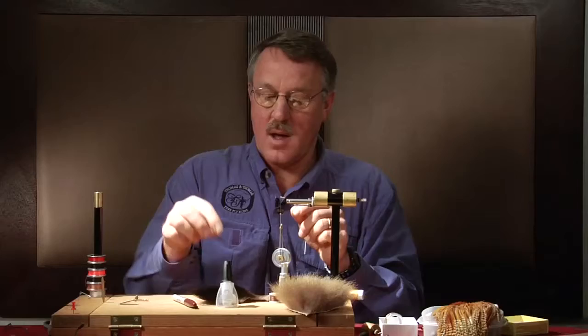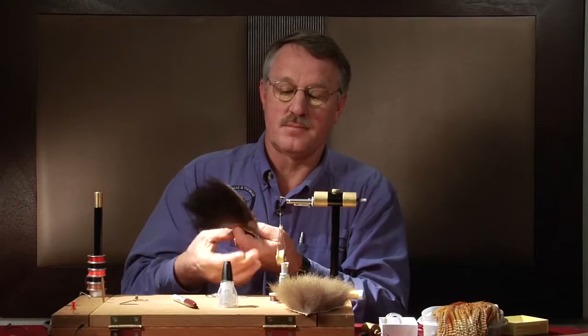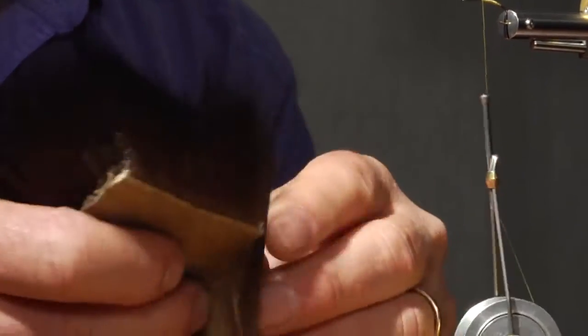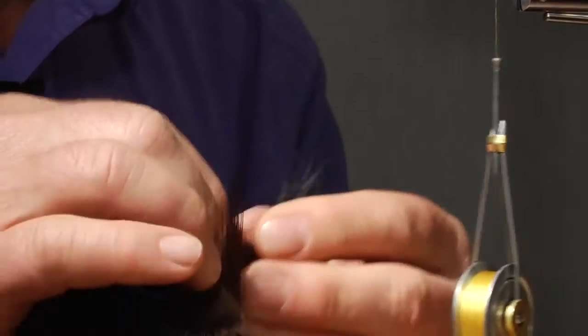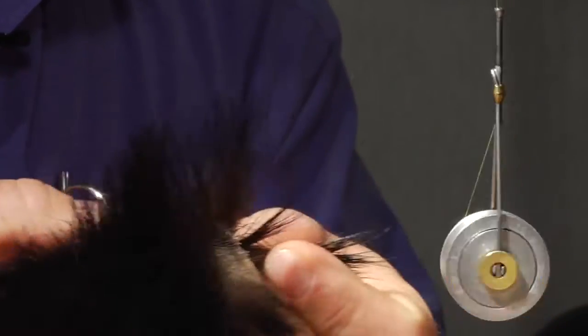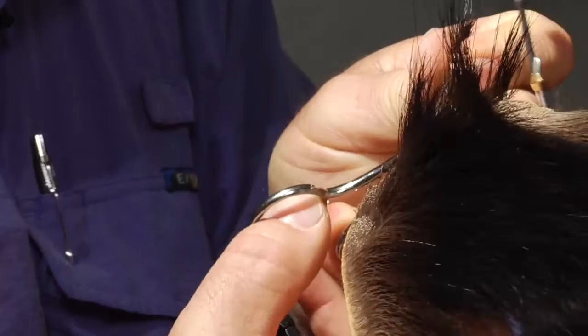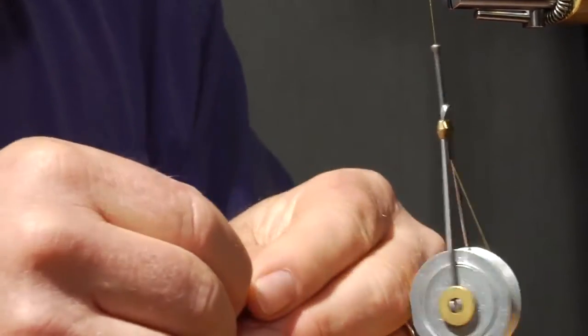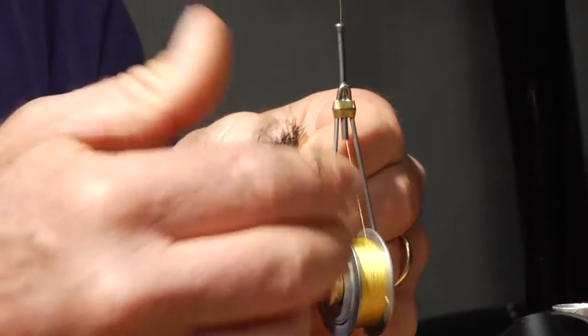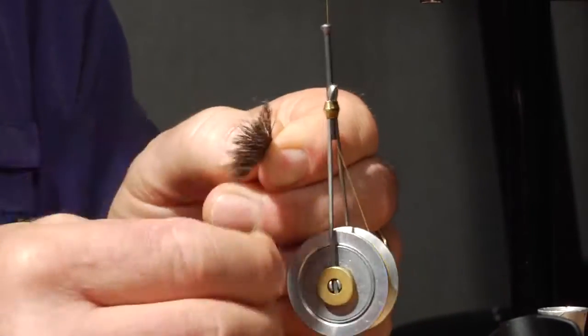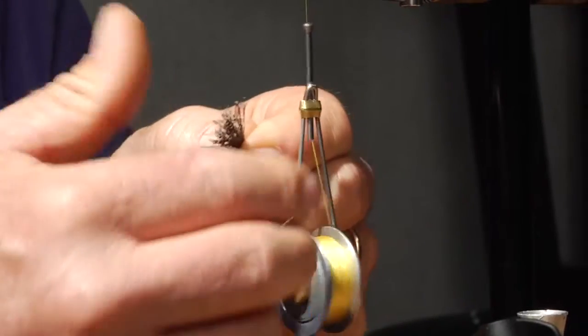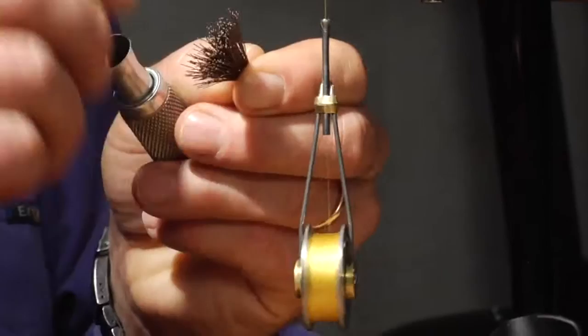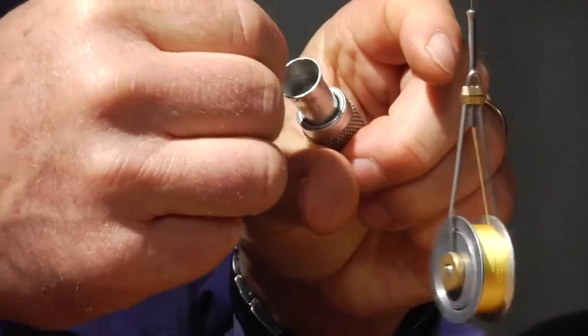Now I'm going to make a body out of moose hair. This will make the body as well as the tail. So I'm going to cut off a clump like so, clean it up a little bit, take all the fuzz out of it. And then we'll put it in the stacker and stack all the ends straight.